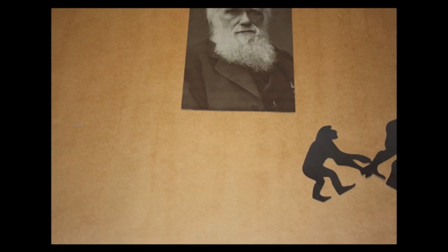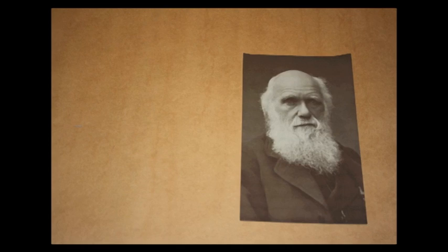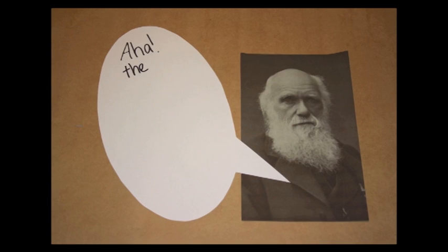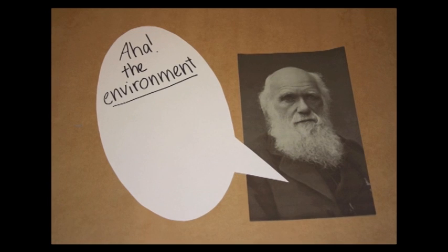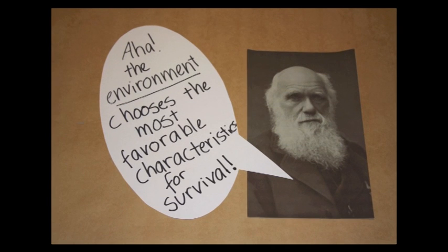But just how this happens comes down to a thing called natural selection, discovered by this guy, Charles Darwin. He realized that it's the environment that selects characteristics that are favorable to a species' survival, determining whether they live on or die out.